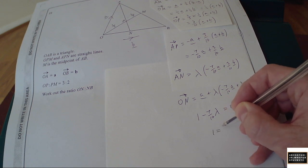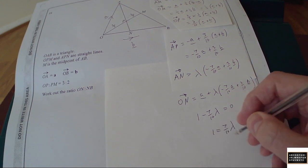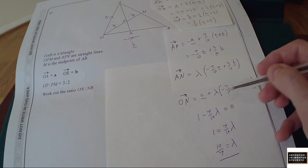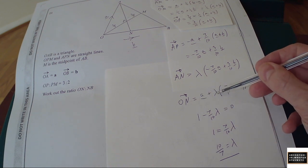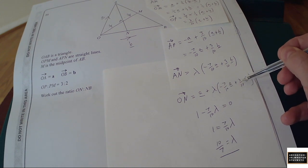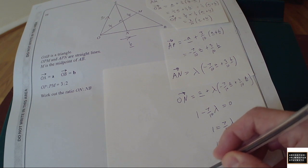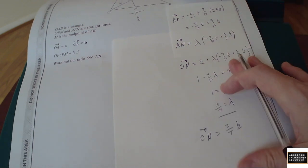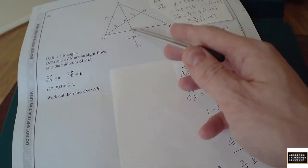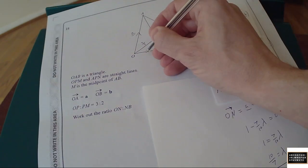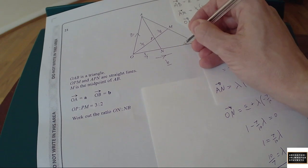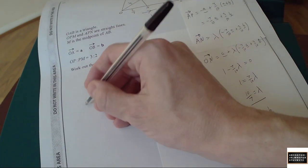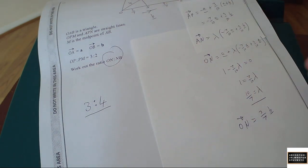Finding lambda: one equals seven-tenths lambda, so lambda is ten-sevenths. That means ON will be — since the a parts cancel out — ten-sevenths times three-tenths b, which is three-sevenths b. So vector ON is three-sevenths b. The a parts have cancelled out, confirming it's a multiple of b.